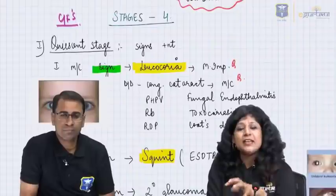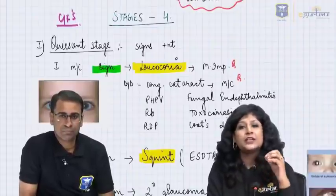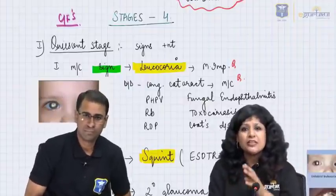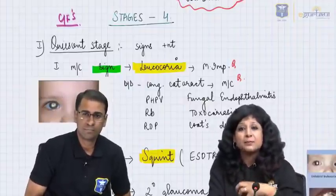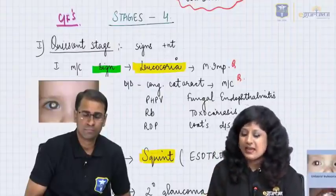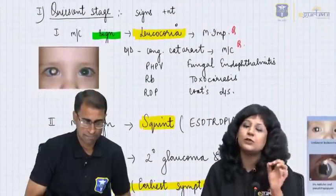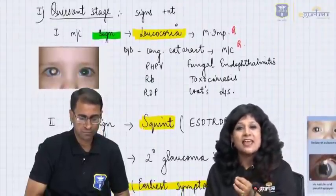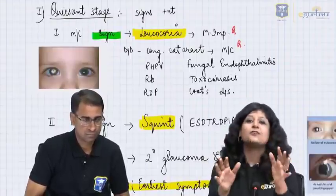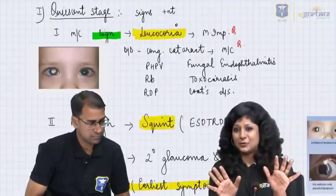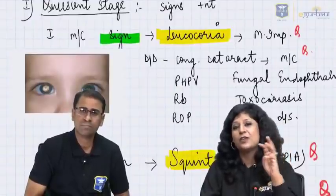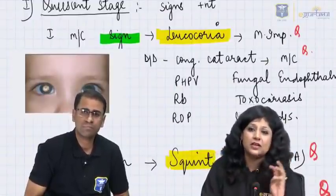Intraocular tumors go through four stages. These tumors are asymptomatic in the beginning, so they present more with signs. The most important differential diagnosis for leukocoria is retinoblastoma. A one-and-a-half-year-old child with leukocoria — 80% of the time the answer is retinoblastoma. Always think retinoblastoma when a mother of a one-and-a-half-year-old child presents with leukocoria — whether unilateral or bilateral.